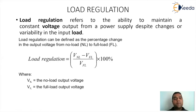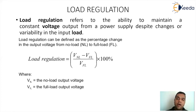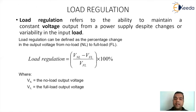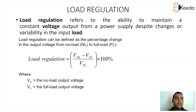When we talk about regulation parameters, the first parameter is load regulation. Load regulation refers to the ability of the regulator circuitry to maintain constant voltage output from a power supply despite changes or variability in the load connected. The power supply design is normally independent of the load because any type of load can be connected. For example, a mobile charger can charge different mobile families, meaning the load keeps changing, which may cause variations in the output voltage. If we want the output voltage to be stable despite load variations, that is called load regulation.